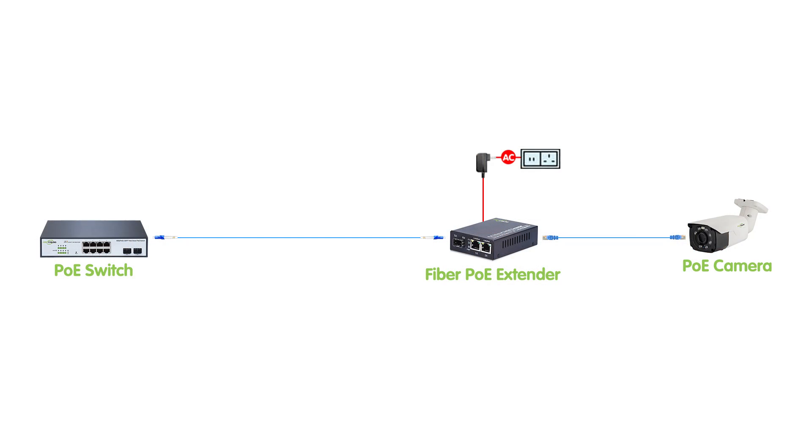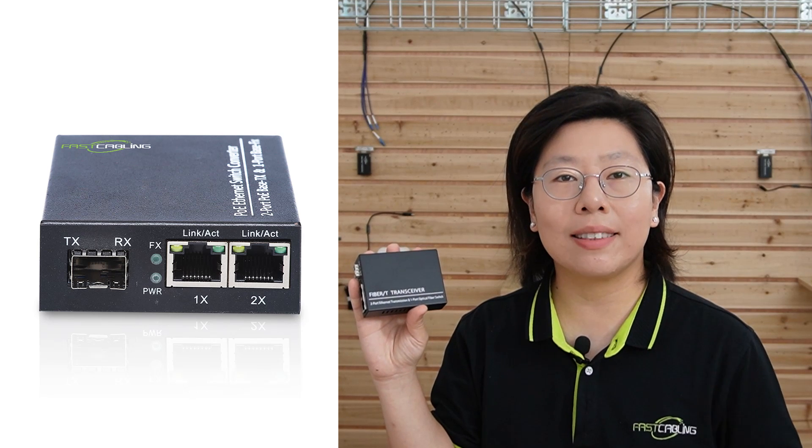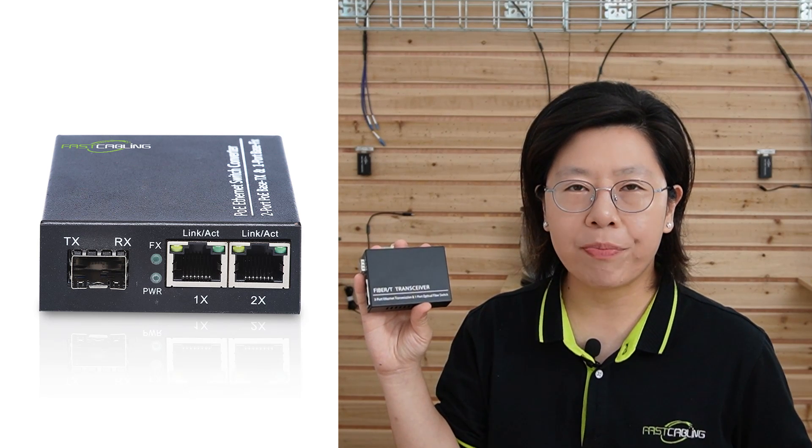Next, we have our fiber PoE extender. This is a practical device to transmit high power and gigabit network for an extra 100 meters by eliminating the need for dedicated AC outlets. It is available with a 1 gigabit SFP slot and two 1,000 megabit per second ethernet PoE ports, so it can be used as a fiber-to-ethernet converter or used in a pair to create a fiber optic link. Each RJ45 port supports both IEEE 802.3af and 802.3at standard compliant power devices.